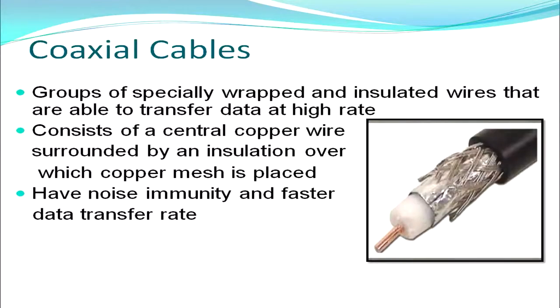We move on to coaxial cables — a better transmission medium. It has a specially wrapped insulated wire able to transfer data at a high rate. Since the wires are insulated, the problem of noise and interference is reduced. The central copper wire is surrounded by an insulation layer, above which a copper mesh provides very good noise immunity and a faster data transfer rate compared to twisted pair. Because of these features, coaxial cables can be used in long-distance communication for telephone lines and for LANs.